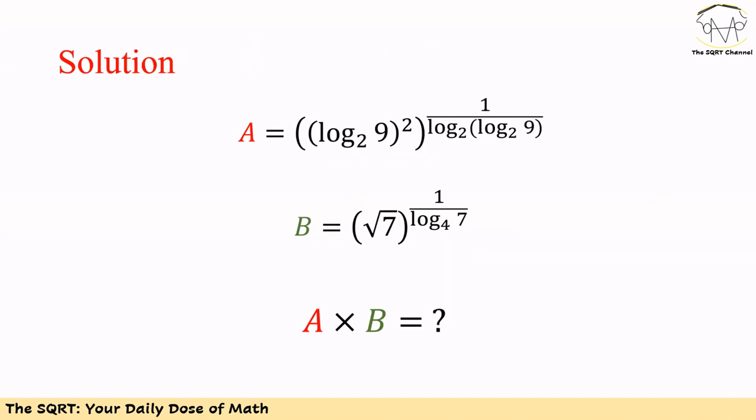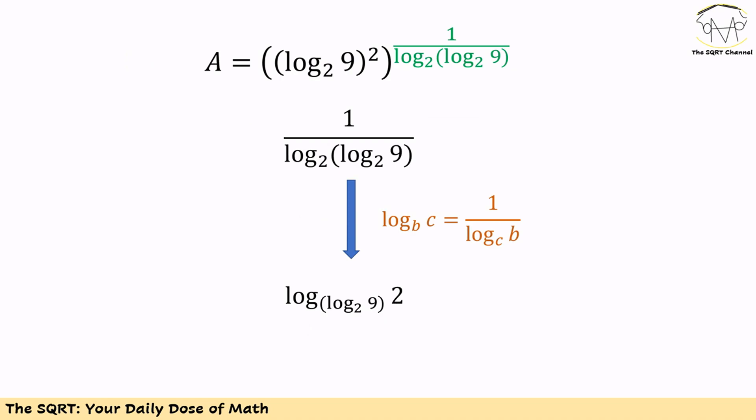To solve this problem we are going to break down the whole expression into two terms and independently evaluate each term, then calculate the product. Let's start with the first term. The first term has 1 over log in base 2 of log 9 in base 2 in the exponent. We are going to simplify that.